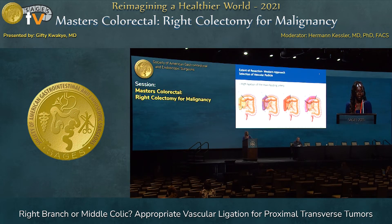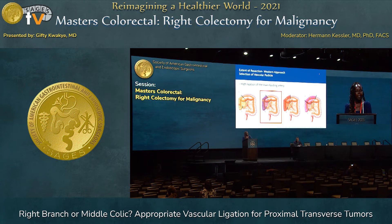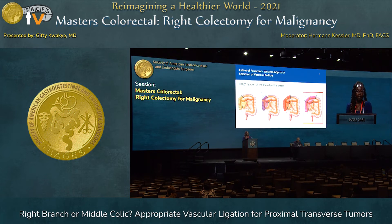When we think about which vessel to resect, a lot depends on where your tumor is located. For right-sided colon tumors, we're usually going for the ileocolic pedicle. As you move further up, depending on the tumor's distance from the feeding vessel, this determines whether you take the right branch of the middle colic or the full middle colic artery. As it goes to the hepatic flexure and further along, you aim for the middle colic artery. With CME and D3 lymph node resections, you're going for the main feeding vessel, so the MCA is more of interest in those situations.